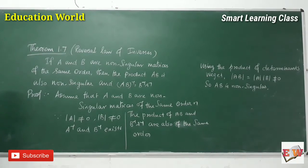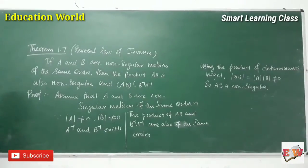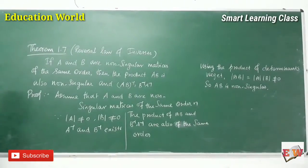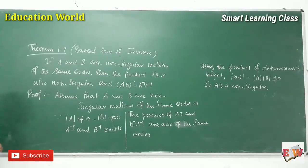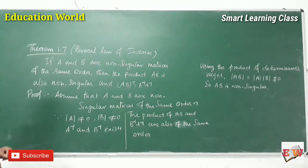Hi students, now we are going to see Theorem 1.7. It is known as the Reversal Law of Inverses. If A and B are non-singular matrices of the same order, then the product AB is also non-singular.